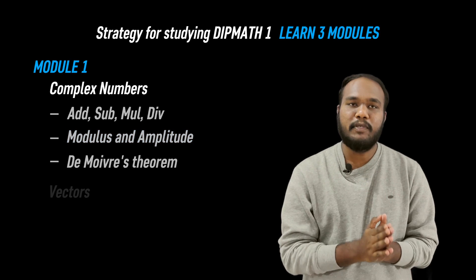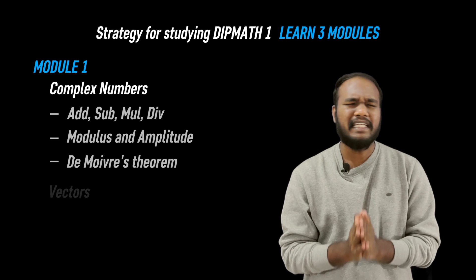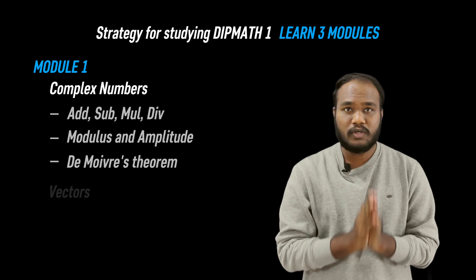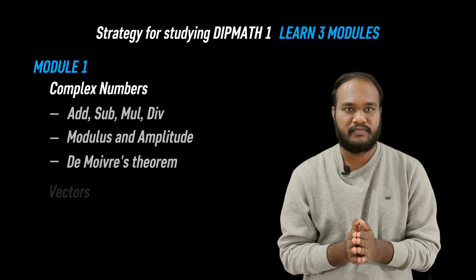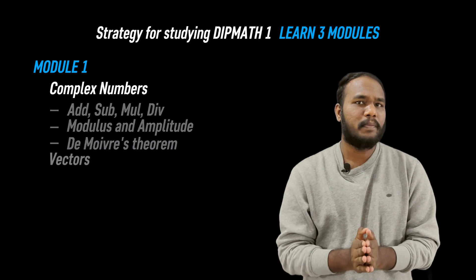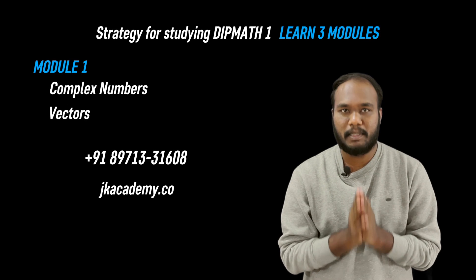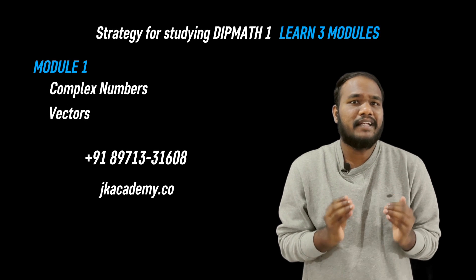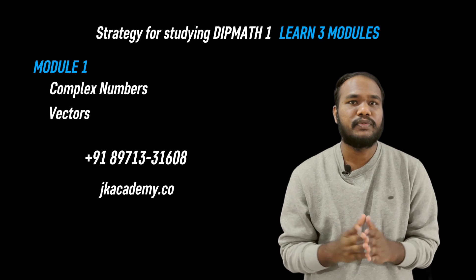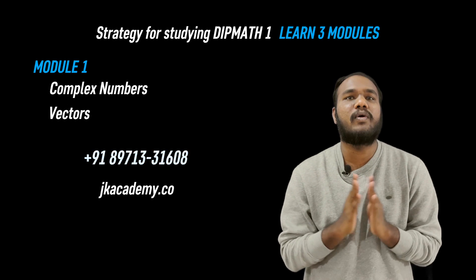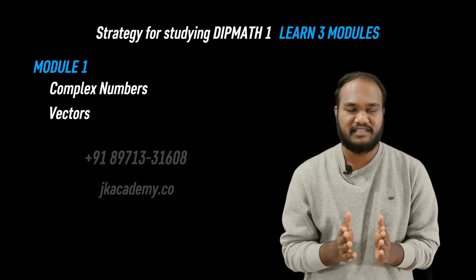Next is modulus and amplitude of a complex number, which consists of basic formulas. The last topic in complex numbers is De Moivre's theorem. In this topic, they will only ask questions from previous year question papers, but the questions are a little trickier. No need to worry — we have made videos showing how to solve the questions on De Moivre's theorem. Call us right now to get this.